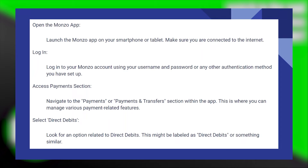Setting up Direct Debit on Monzo instantly is very easy to do. Today I'm going to show you how to do it. First, launch the Monzo app on your smartphone or tablet. Make sure you are connected to the internet. Log in to your Monzo account using your username and password or any other authentication method you have set up.